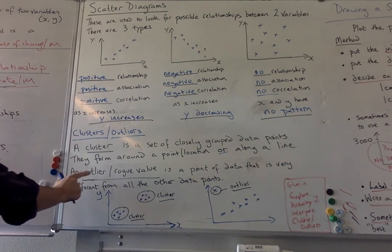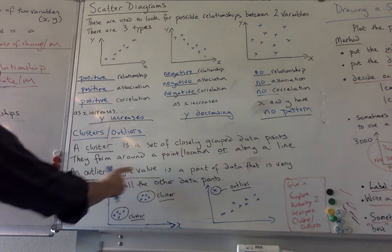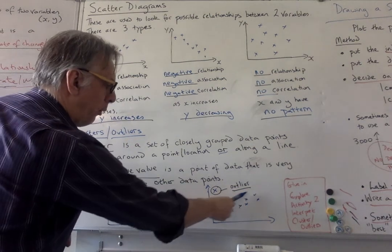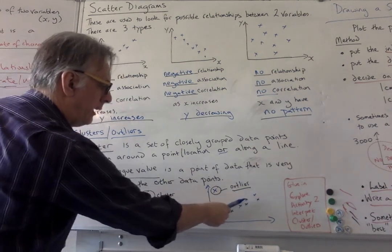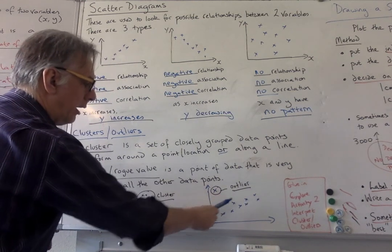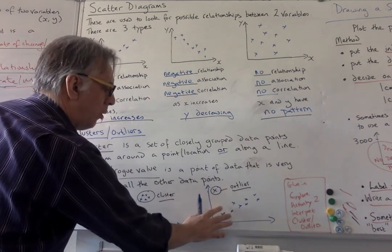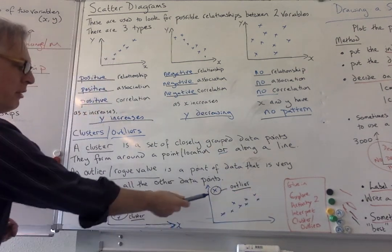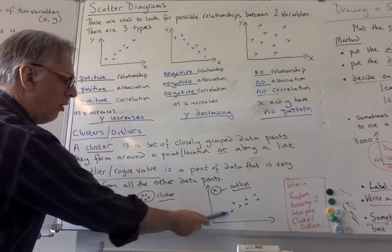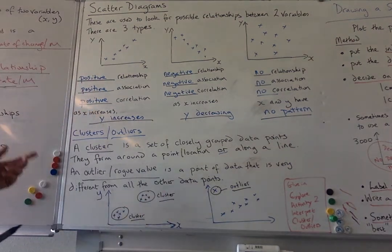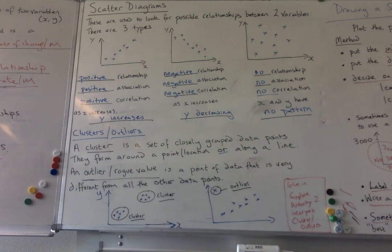The other one is when you have an outlier or something that's called a rogue value. So this is a point of data that is very different from all the other data points. So as you can see here these points are sort of clustered. If we put a line in here they're sort of clustered around a line. They're going in a linear direction slowly in this direction. But this one is certainly not in with this group of people. So this is what we'd call an outlier and often I've heard it referred to as a rogue value as well.